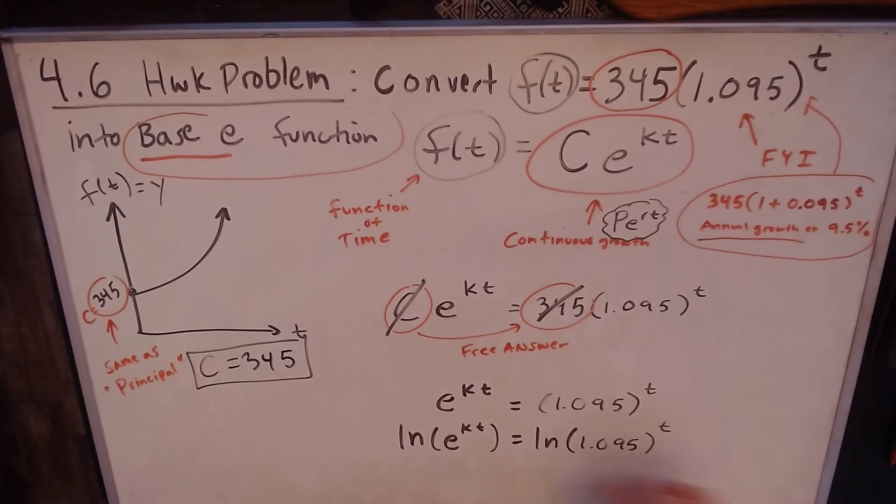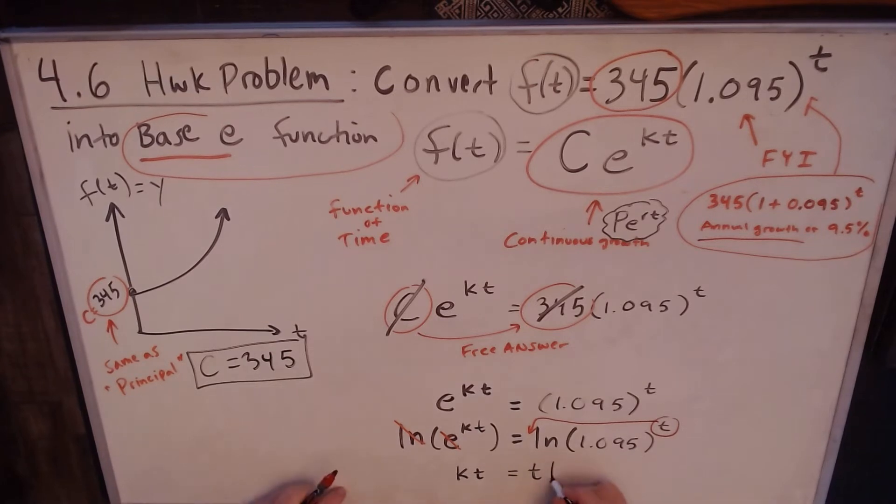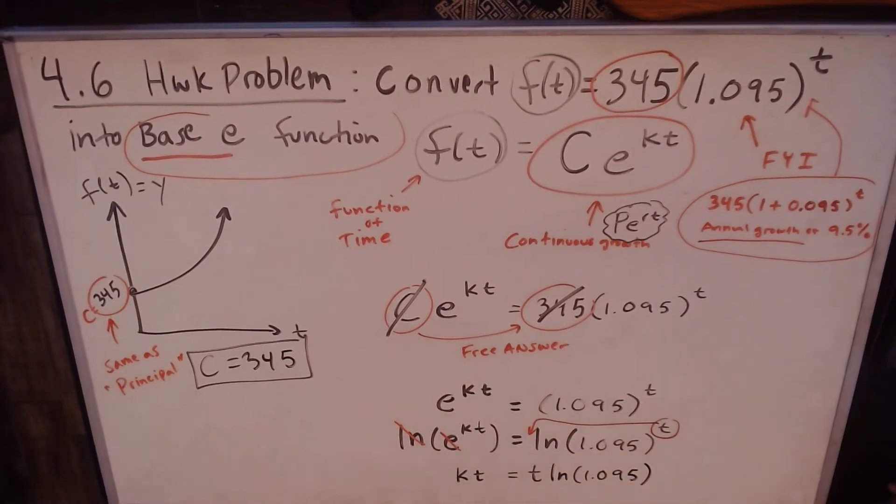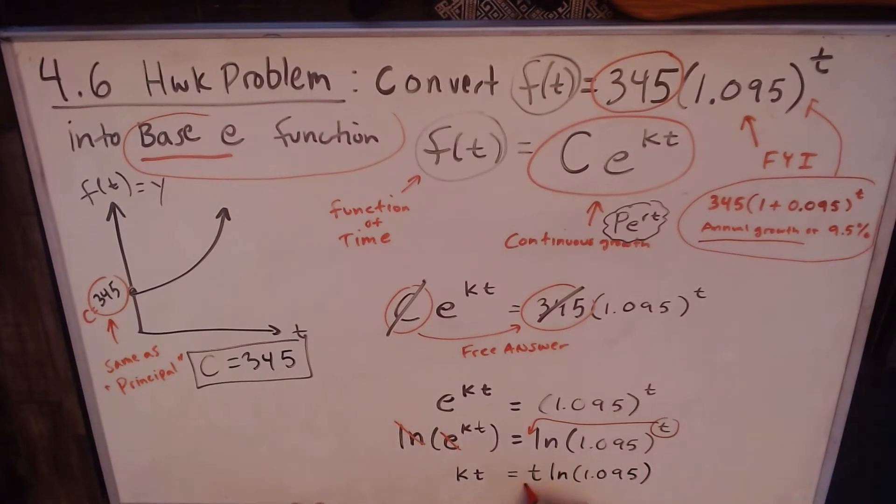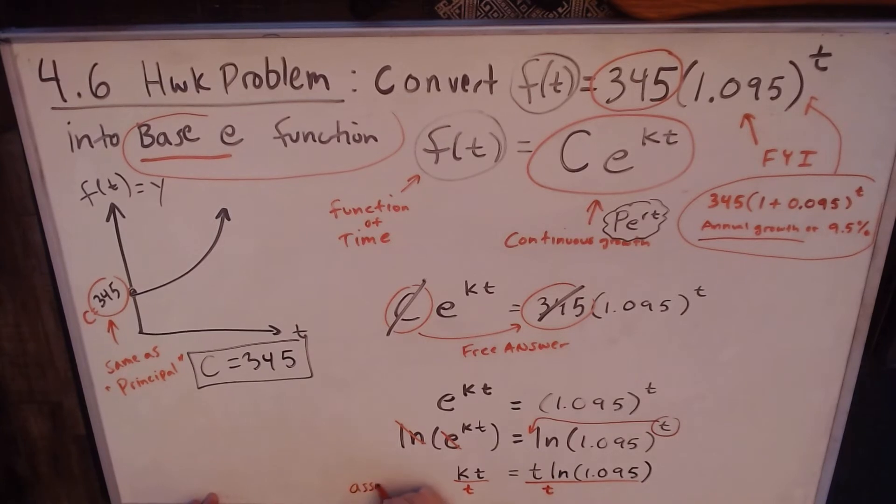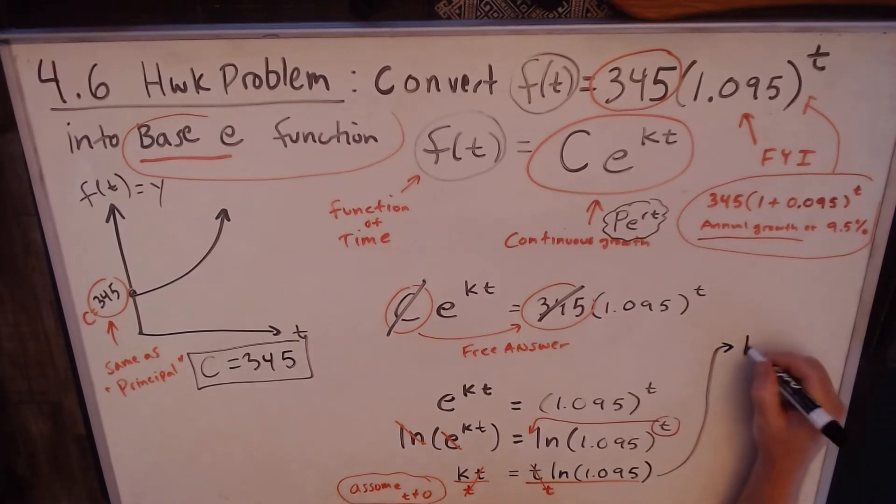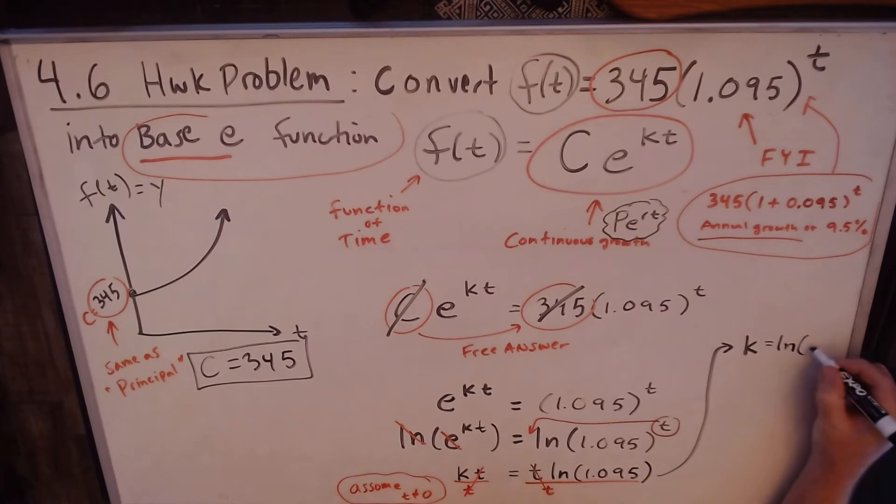Now we have e^(kt) equals 1.095 to the t power. Why are we using e? Well, because it's a nice natural base that allows us to take the ln of both sides. The nice things about e, I mean I sometimes say I like it because it's only two symbols, and that's one good reason. But the real reason why I like it is because ln and e are nice inverses of each other and they will cancel out and it gives us a very simple way of solving for k.